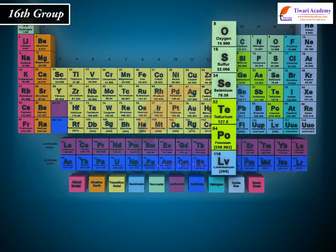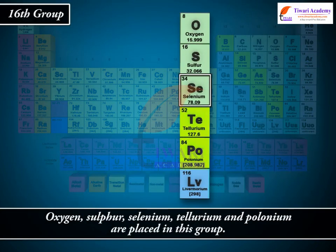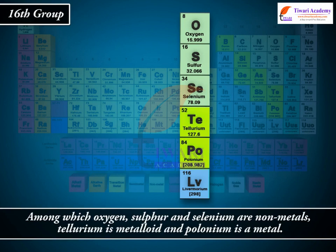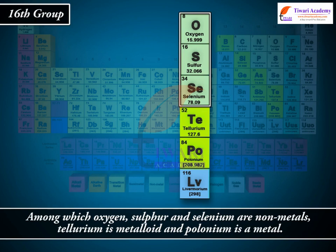In the 16th group, Oxygen, Sulphur, Selenium, Tellurium and Polonium are placed. Among which, Oxygen, Sulphur and Selenium are non-metals, Tellurium is a metalloid, and Polonium is a metal.